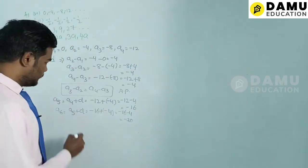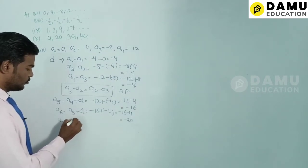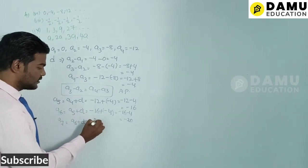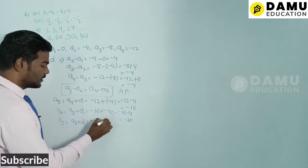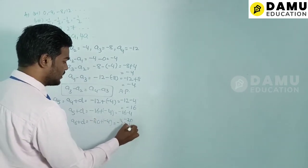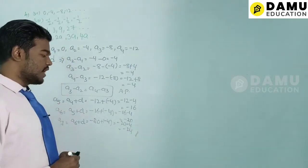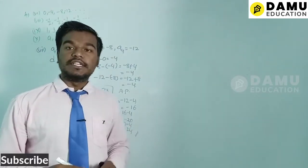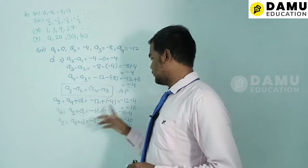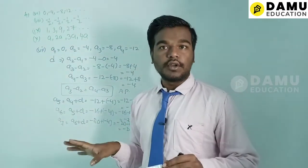Then a7 = a6 + d = −20 + (−4) = −20 − 4 = −24. The three more terms are −16, −20, and −24.